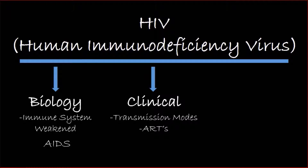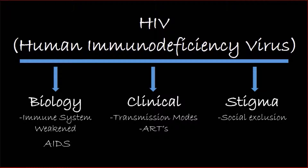So you learn about the biological aspects of HIV and you learn about the clinical aspects. But there's really one thing that hasn't been discussed too often in the classroom, and it's the stigma of HIV infections, particularly in developing nations. There are fairly few studies that have really captured the essence of the causes of stigma and what that stigma looks like in certain developing nations. But a fairly complex and comprehensive report has been published by the International Center for Research on Women, which is included in the comment box for those interested.